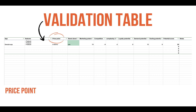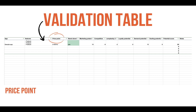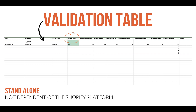The first column is price point — this is where you try to understand how much merchants will be willing to pay for that app. For example, if you're just adding a banner to the store, charging $2 to $5 a month makes sense. But if you create an app that actually generates revenue, you can charge based on the amount of revenue you generate for that store, which is a better business model. The next column is a yes or no question: can your product be a standalone product, meaning it's not dependent on the Shopify platform? For the long run, you'd ideally want to take your product outside of Shopify to other platforms to make your company more stable and not controlled by Shopify.